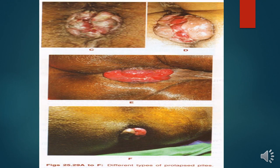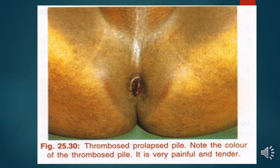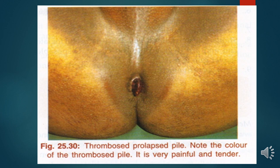The slide here shows different types of prolapsed hemorrhoids and their color and stage. The following picture — figure 25.30 — shows a thrombosed hemorrhoid. Note the color of this thrombosed hemorrhoid. Thrombosed hemorrhoids tend to be very painful and tender on examination — just touching or palpating on it will present with severe pain.